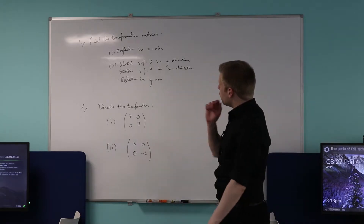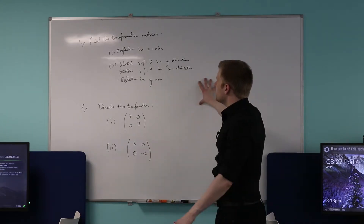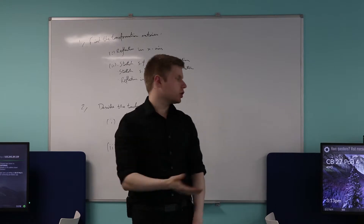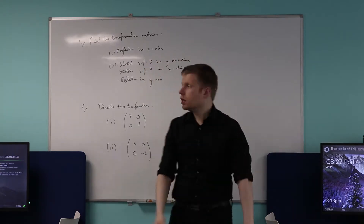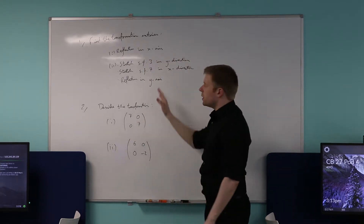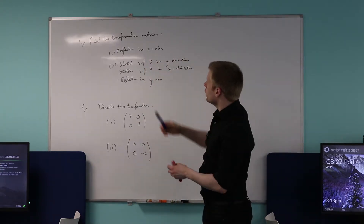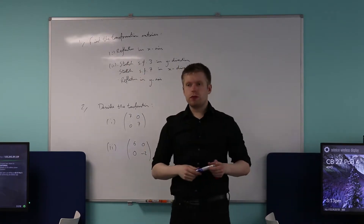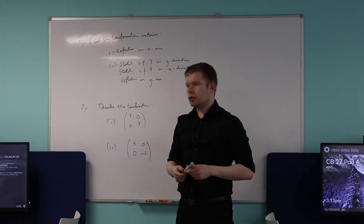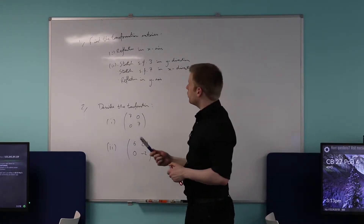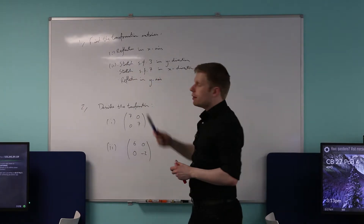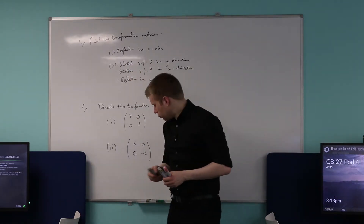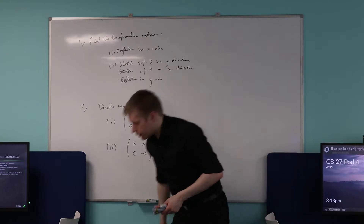Question one is basically: you need to come up with the transformation matrices that describe each of these transformations. I've given you two. Number one says, find me the transformation matrix that describes a reflection in the x-axis. So who can remember, how do we go about doing this?